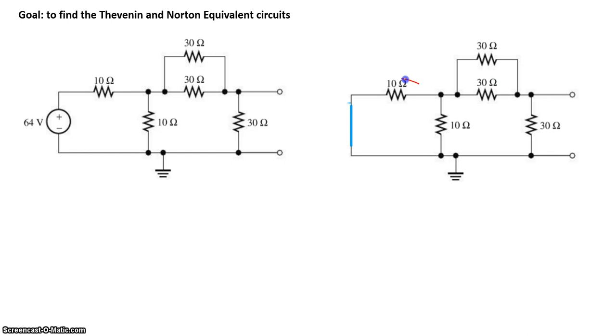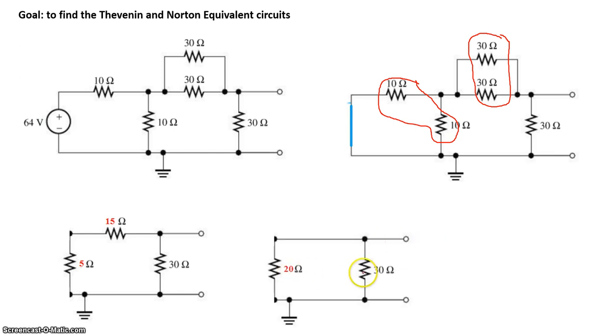Now doing that, we see that the 10 ohm and this 10 ohm are in parallel. We see the 30 ohm and that 30 ohm are also in parallel. So we can write this as 10 and 10 in parallel gives us 5, 30 and 30 in parallel gives us 15. Now we see 15 and 5 are actually in series. So we get 20 ohm in parallel to 30 ohm. And if we simplify this, we basically get a total Thevenin resistance of 12 ohms.